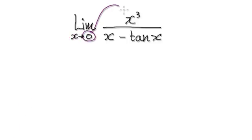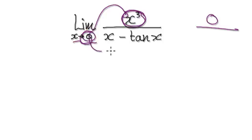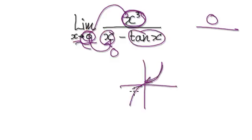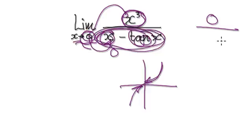Okay, so to do this, the first thing we should do is check — put 0 into here. As x tends to 0, this thing is going to head towards 0. Put 0 into here, this thing will head towards 0. And tan — remember the tan graph looks like this — so as x tends to 0, it is also heading towards 0. So this is going to be 0 take away 0, and this whole thing is going to head towards 0.